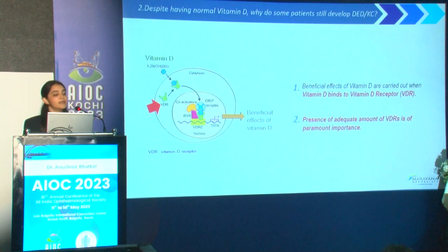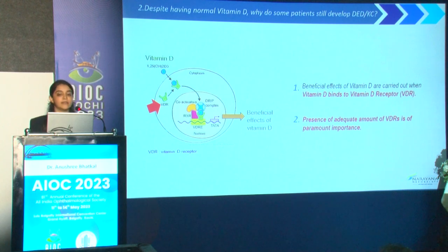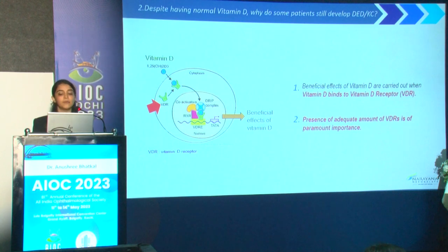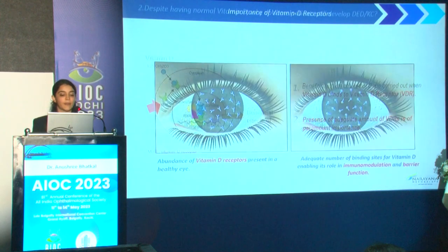On the other hand, despite having a normal vitamin D level, some patients still develop dry eye disease or keratoconus. This is important because the beneficial effects of vitamin D are carried out when vitamin D binds to the vitamin D receptor, and therefore the presence of adequate vitamin D receptors is of paramount importance.